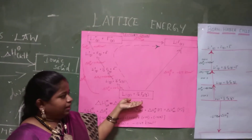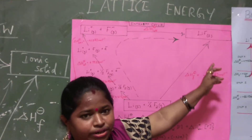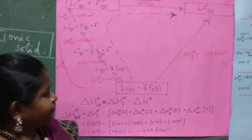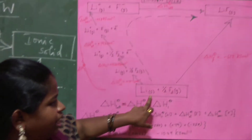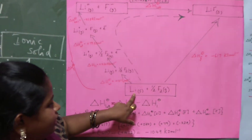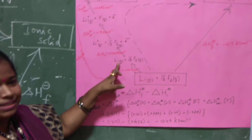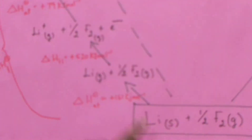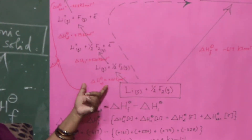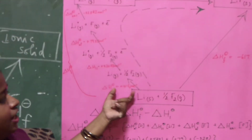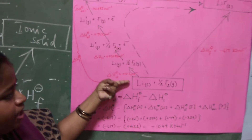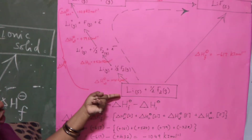I have taken lithium fluoride as an example. The elements are lithium and fluoride. Lithium is shown in the solid state. From solid state to gaseous state, we are converting it — this is the enthalpy change of atomization, which is +161 kJ/mol. It is positive, showing that this process is endothermic.